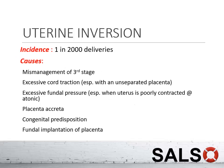Uterine inversion is not common — it occurs around 1 in 2,000 deliveries. A common cause is mismanagement of the third stage, involving excessive cord traction, excessive fundal pressure, and improper controlled cord traction. Other causes include placenta accreta, congenital predisposition such as Marfan syndrome where connective tissue laxity makes the uterus prone to inversion, and fundal implantation of the placenta.